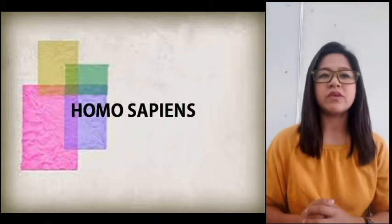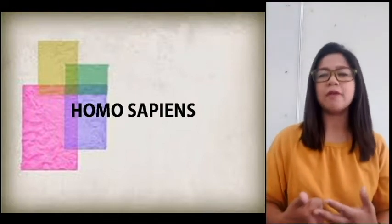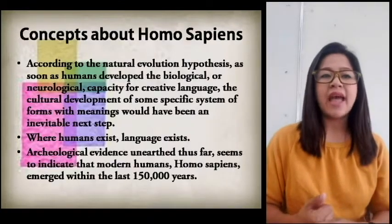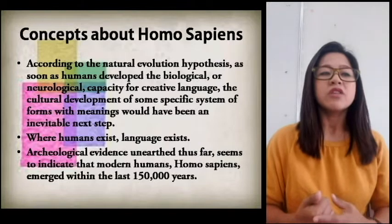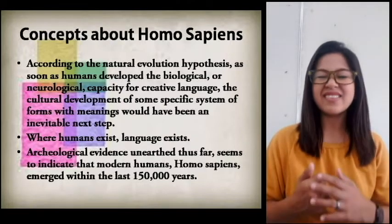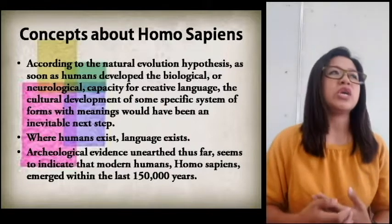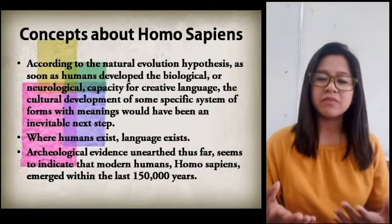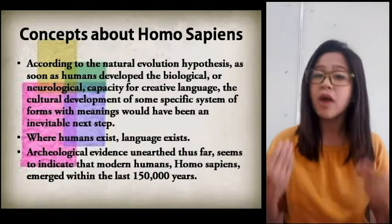We also have the concepts about Homo sapiens — yes, Homo sapiens — which has something to do with Charles Darwin's evolution theory. According to the natural evolution hypothesis, as soon as humans developed the biological or neurological capacity for creative language, the cultural development of some specific system of forms with meanings would have been an inevitable next step. This is saying that where humans exist, language exists. In order for us to communicate, express ourselves, and ask for solutions, we must learn how to communicate through language.